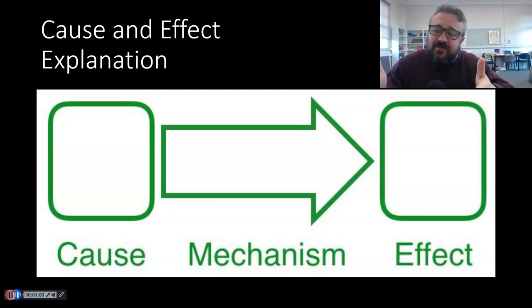the effect is what happens, and the mechanism are the steps within your model, within your specific explanatory model that are happening. So all the systems that are in place there. And we'll have a look at an example in a second.